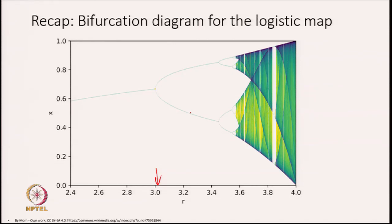We get a stable period-2 orbit, then another period-doubling bifurcation giving a stable period-4 orbit, which then leads to a period-8 orbit and so on, all the way up till 2^n, with n being large numbers, going eventually to aperiodic motion. There is a lot of detail in this bifurcation diagram of course.